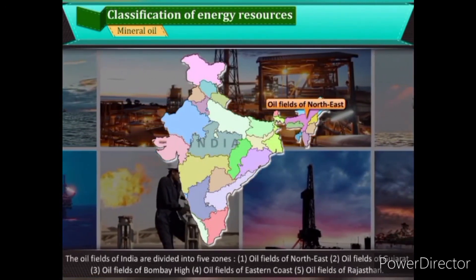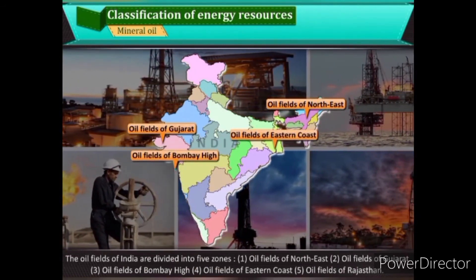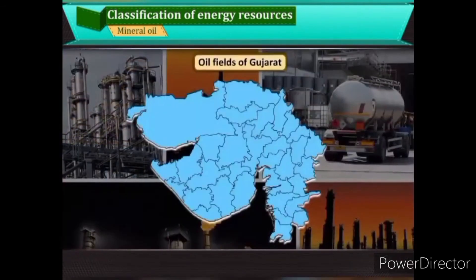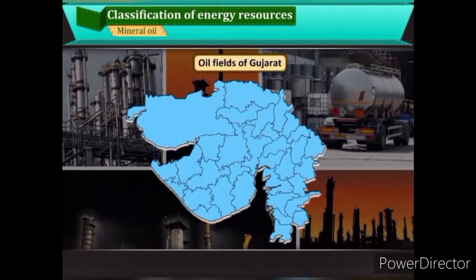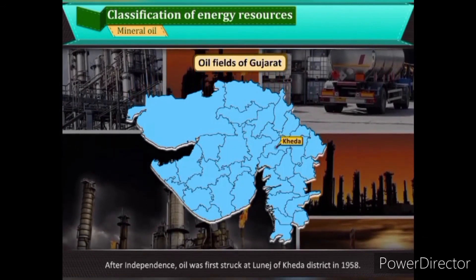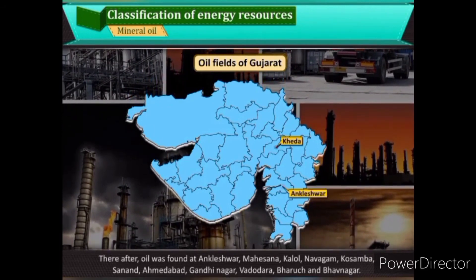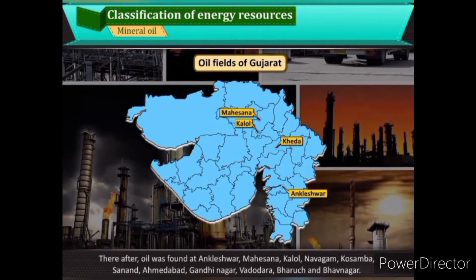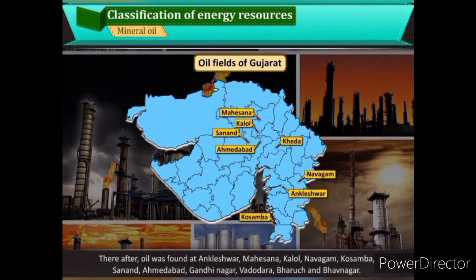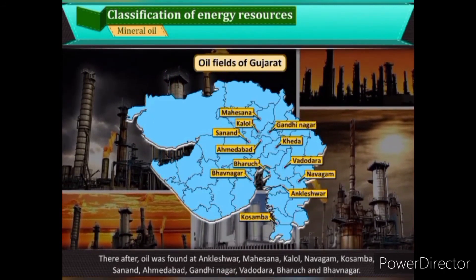The five oil field zones of India are: oil fields of North East, Gujarat, Bombay High, Eastern Coast, and Rajasthan. In Gujarat, oil was first struck at Lunej of Kheda district in 1958. Thereafter, oil was found at Ankleshwar, Mehsana, Kalol, Navagam, Kosamba, Sanand, Ahmedabad, Gandhinagar, Vadodara, Bharuch, and Bhavnagar.